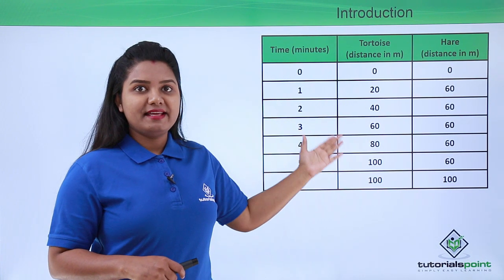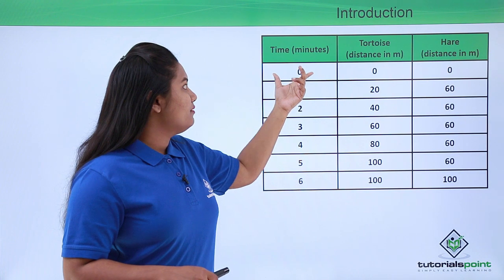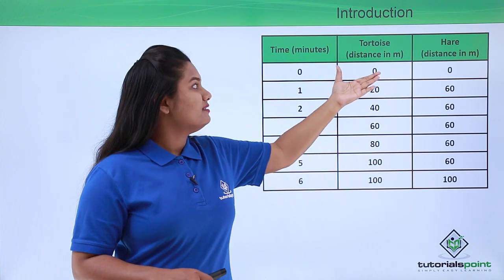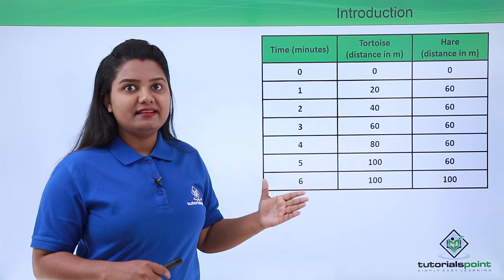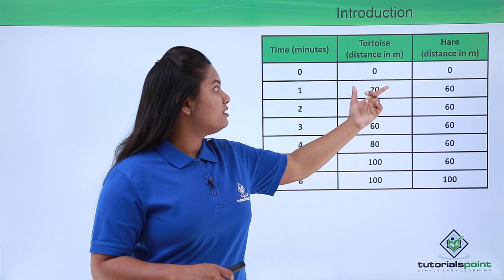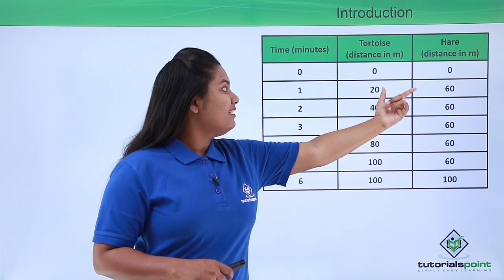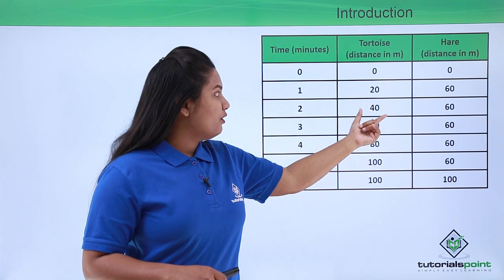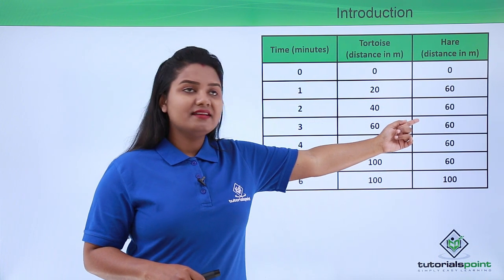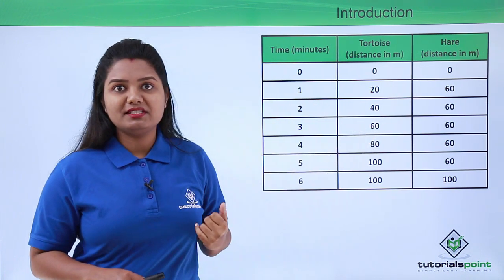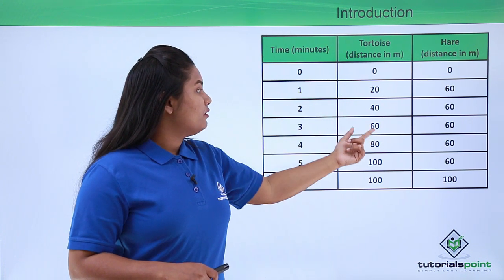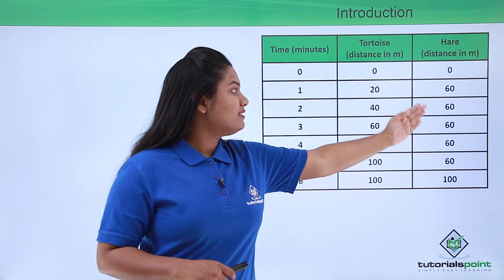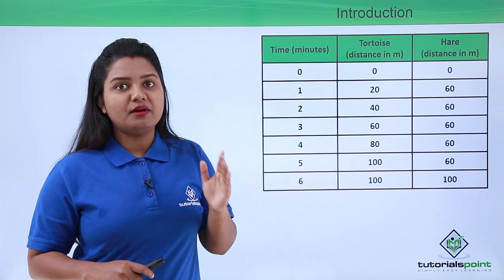Let us analyze what happened throughout the race. Initially, when the time was zero, the distance covered by both the tortoise and the hare was the same — zero meters — indicating both were at the starting point. At the end of one minute the tortoise had covered twenty meters, whereas the hare had covered sixty meters. At the end of two minutes the tortoise had covered forty meters, whereas the hare was still at sixty meters from the starting point. At the end of three minutes the tortoise had again increased its distance by twenty meters to sixty meters, while the hare had travelled the same distance, meaning the hare was not moving and was at rest.